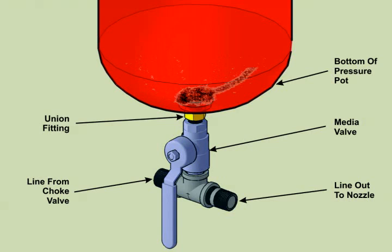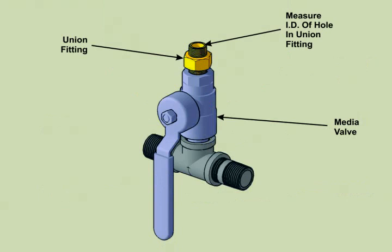A simple fix for this is to add a ventilated stand pipe to the bottom of the pot. Remove the media valve assembly from the bottom of the pressure pot. Measure the diameter of the hole in the union fitting which attaches the media valve to the pot. This is the hole which the air and media must pass through.